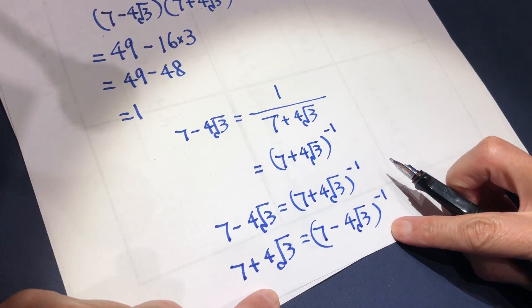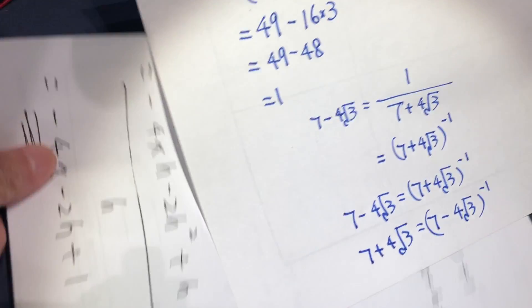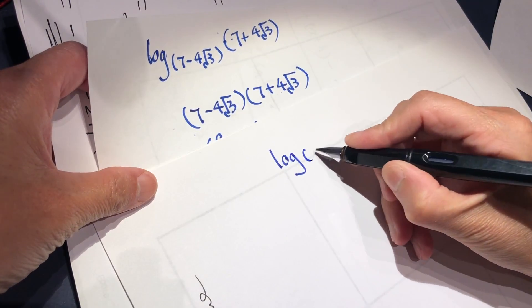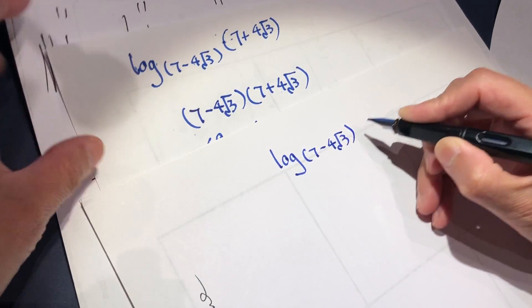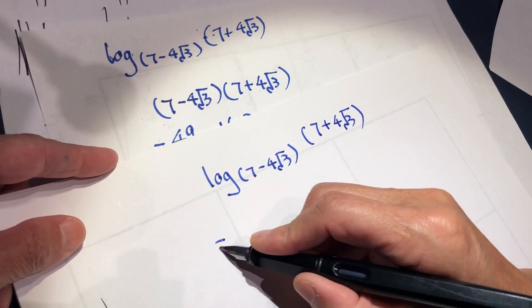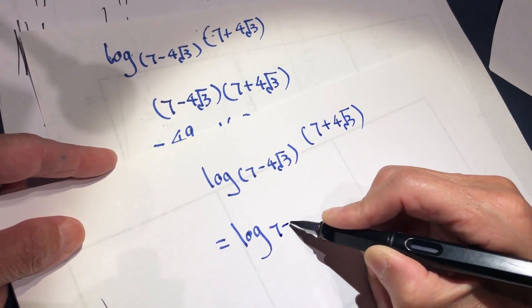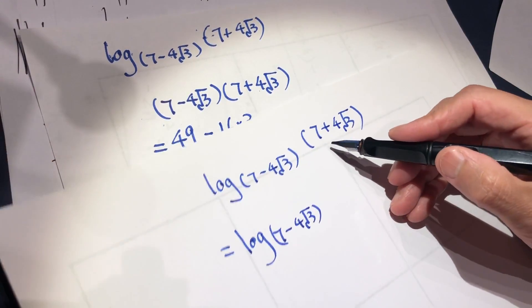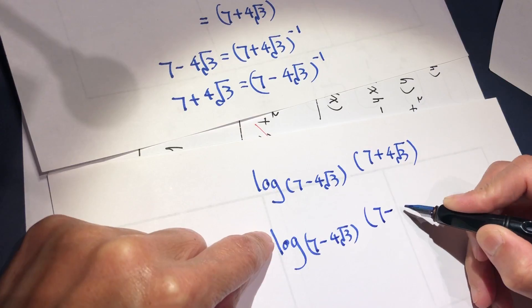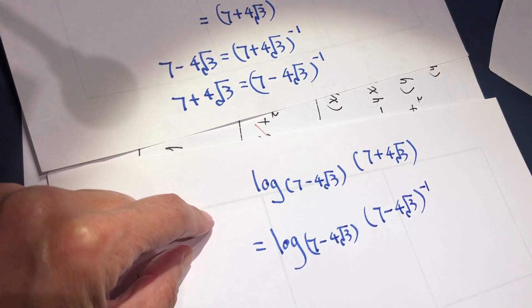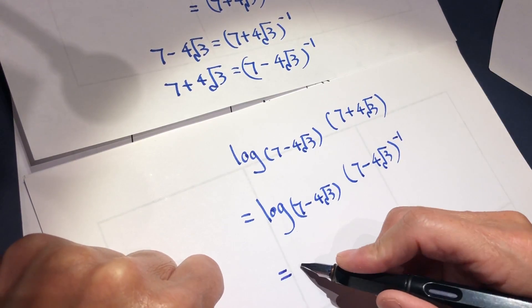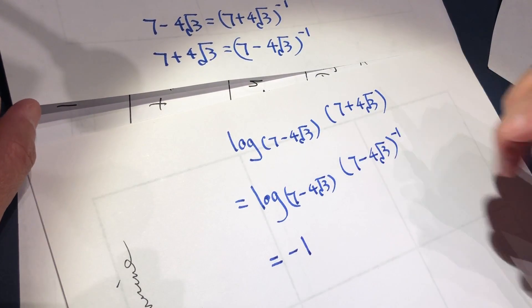So when we have this figured out, what can we do? Log base (7 minus 4 root 3) of (7 plus 4 root 3) — the base we do not change, and we can rewrite 7 plus 4 root 3 as (7 minus 4 root 3) to the power of negative one. Since the base and the argument are the same base, the exponent is negative 1, so the result is negative 1.